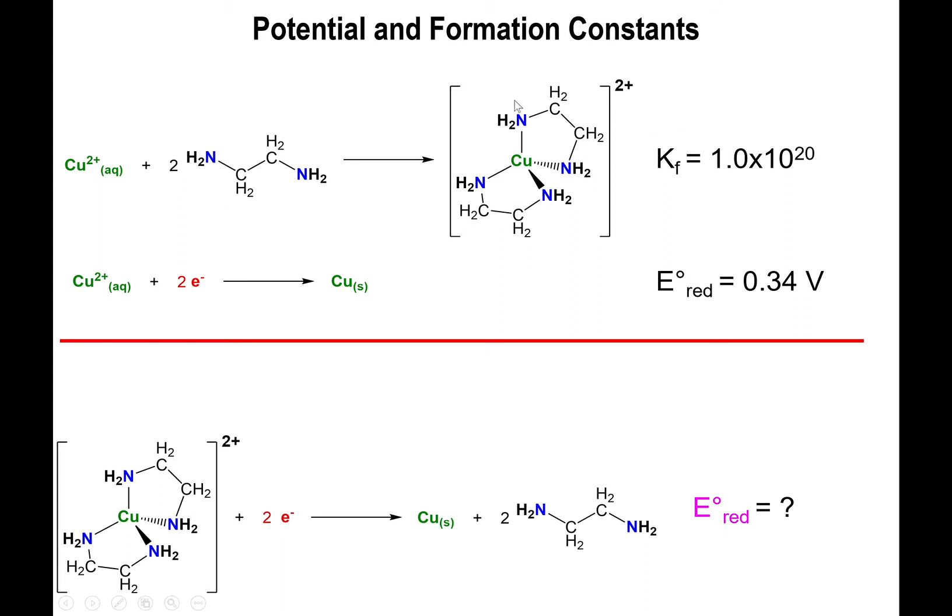Specifically, just to remind you, the formation constant by definition is the naked ion plus the free ligands yielding the complex ion. So this is the balanced equation corresponding to the Kf. You will have to be provided with these Kf values in order to do what I'm about to show you.